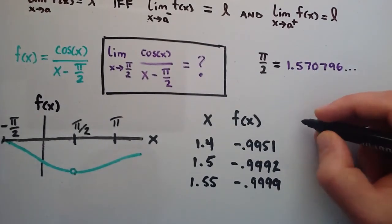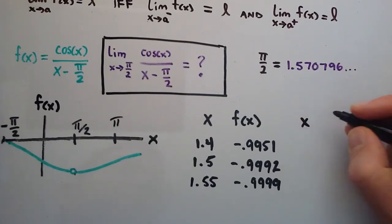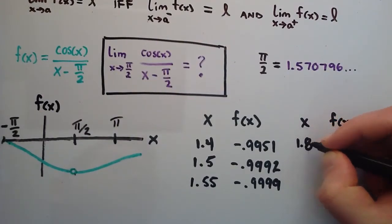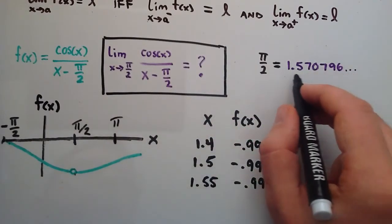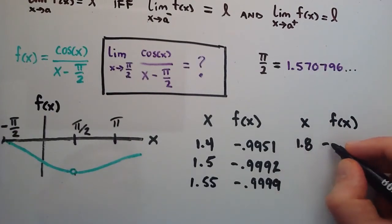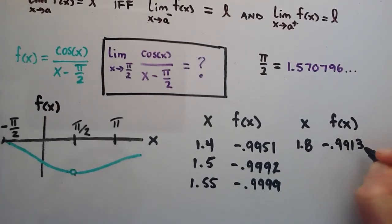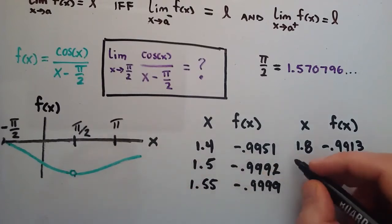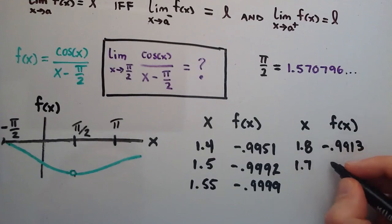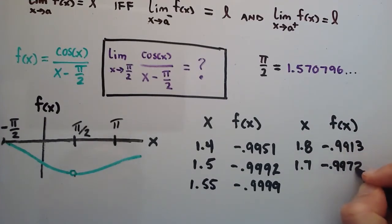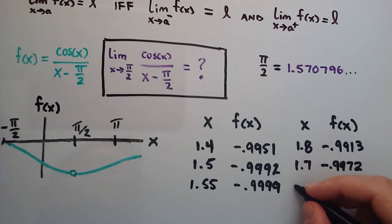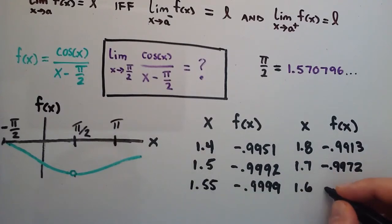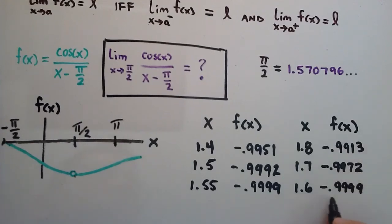Now let's approach from the right-hand side. We again have x and f(x). Starting at x equals 1.8 — which is a little bigger than pi over 2 — f(1.8) is negative 0.9913. Moving closer to pi over 2, at x equals 1.7, f(x) is negative 0.9972. And then at x equals 1.6, we're pretty close — just a little to the right — and we get negative 0.9999.